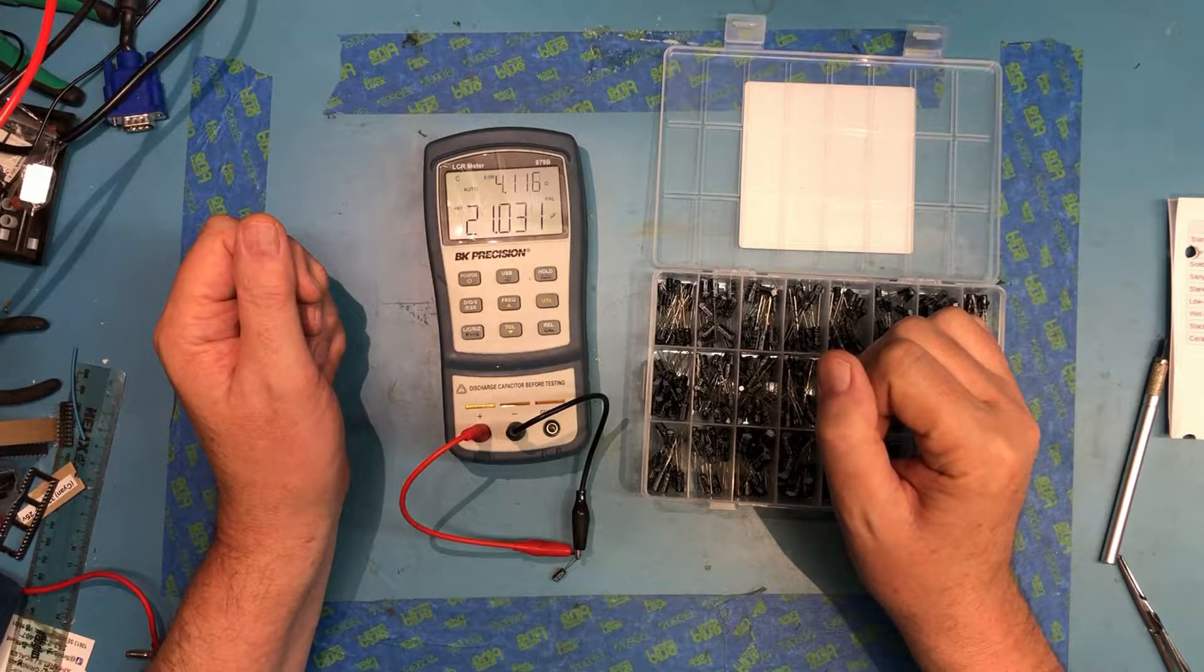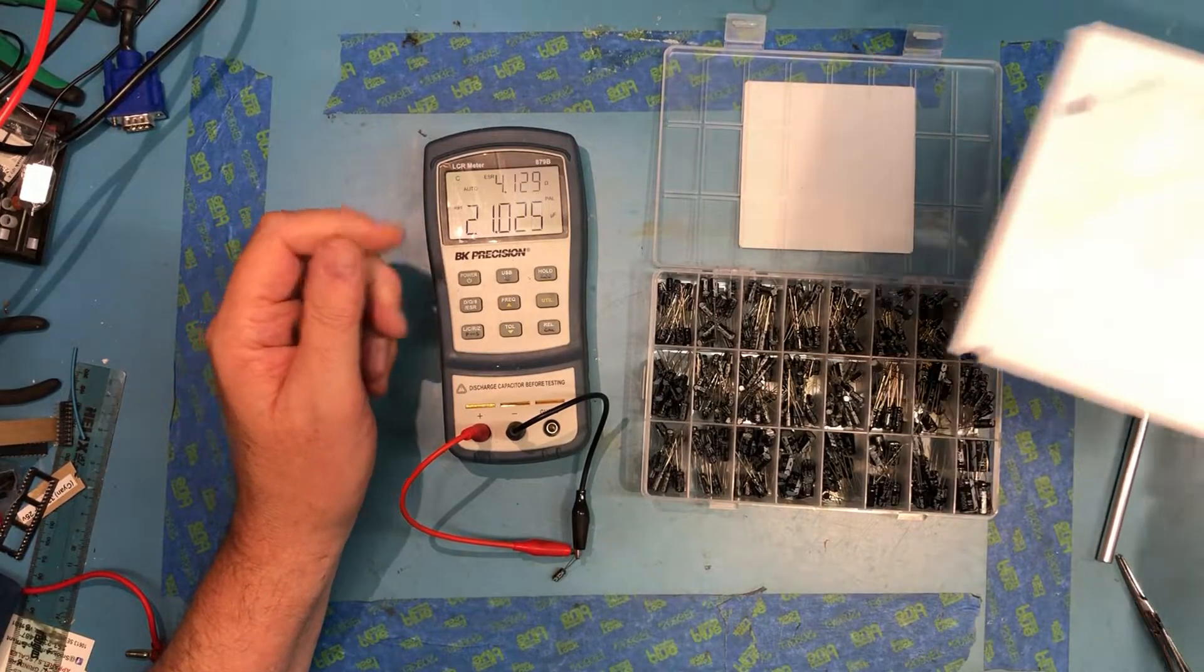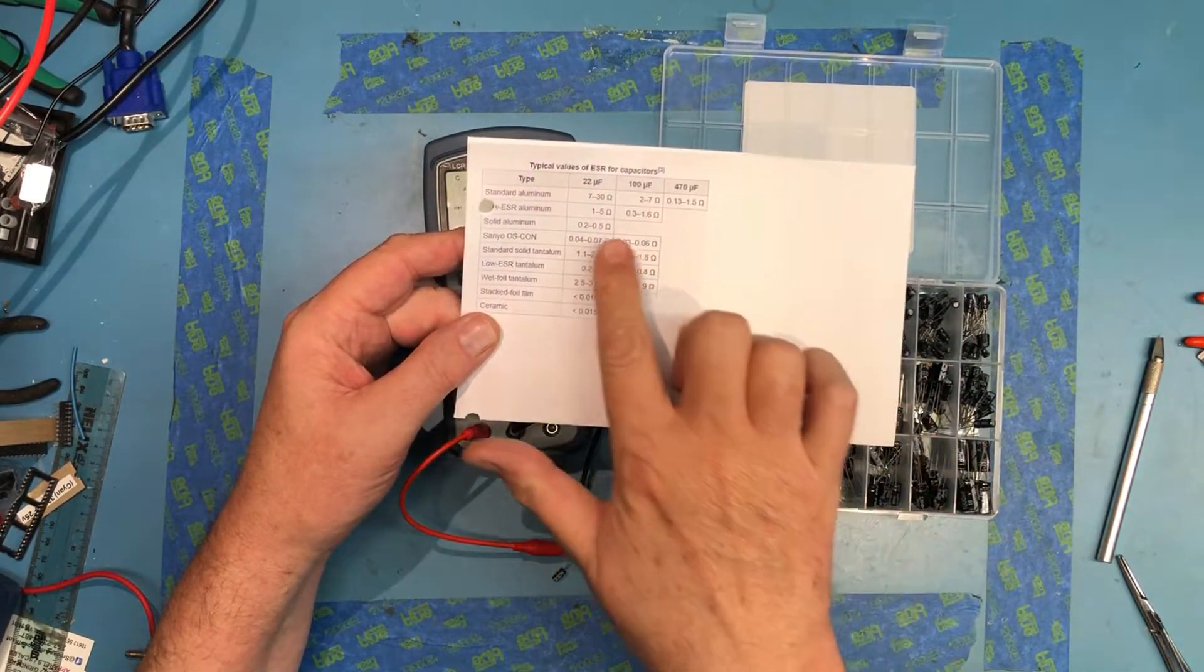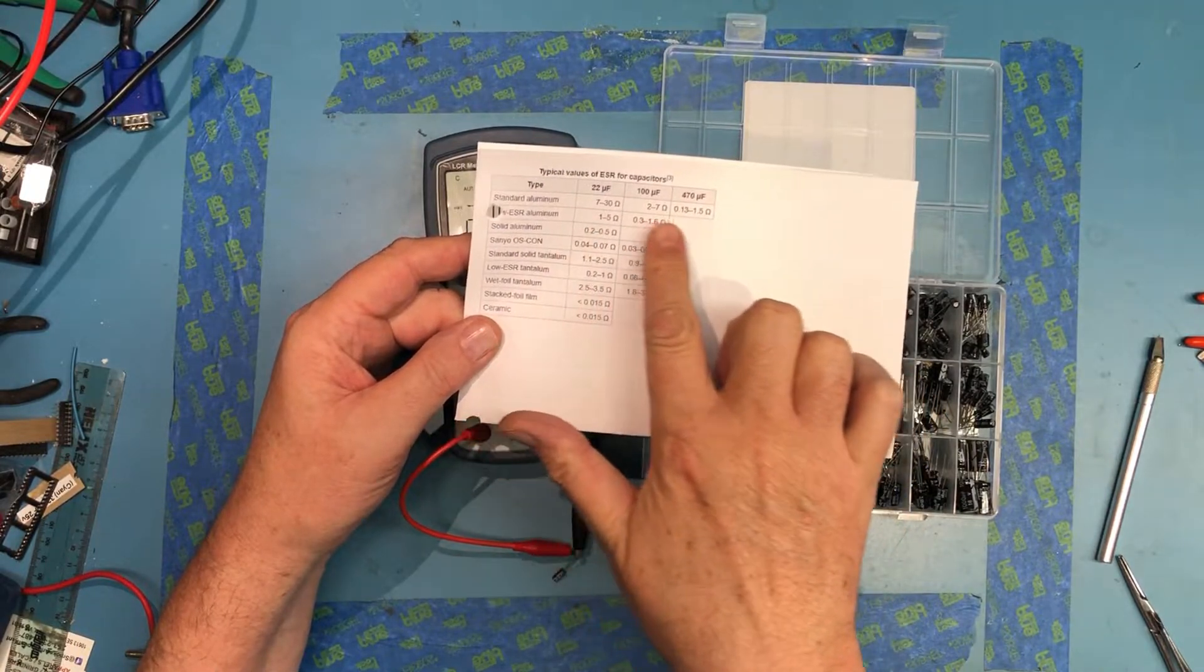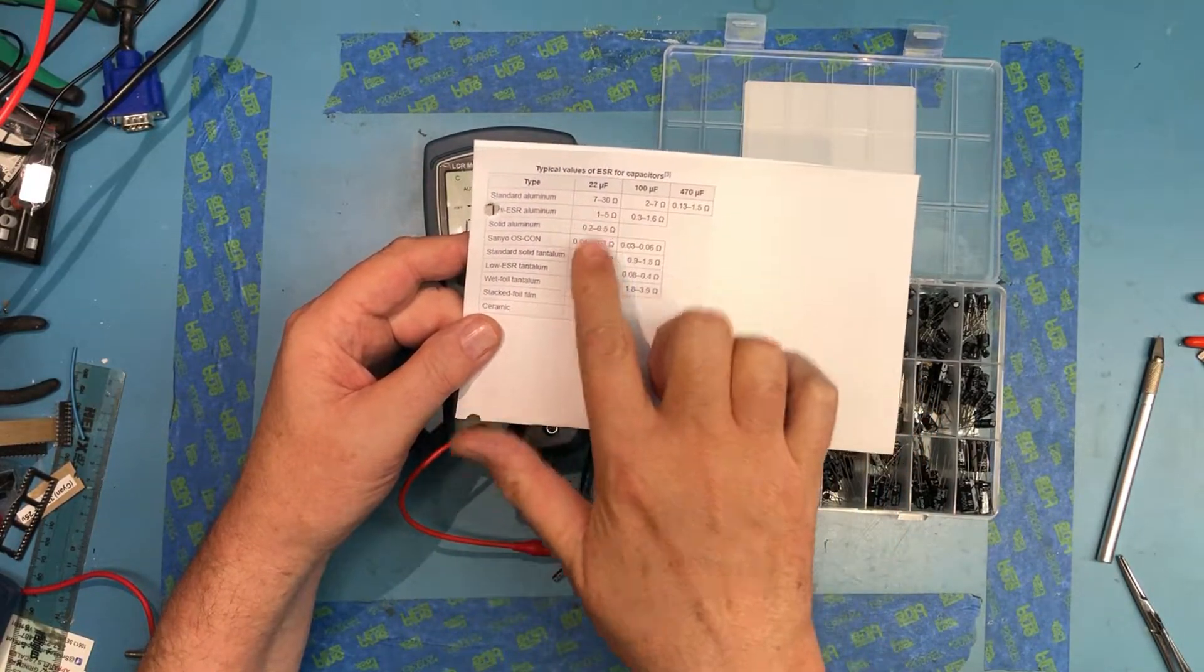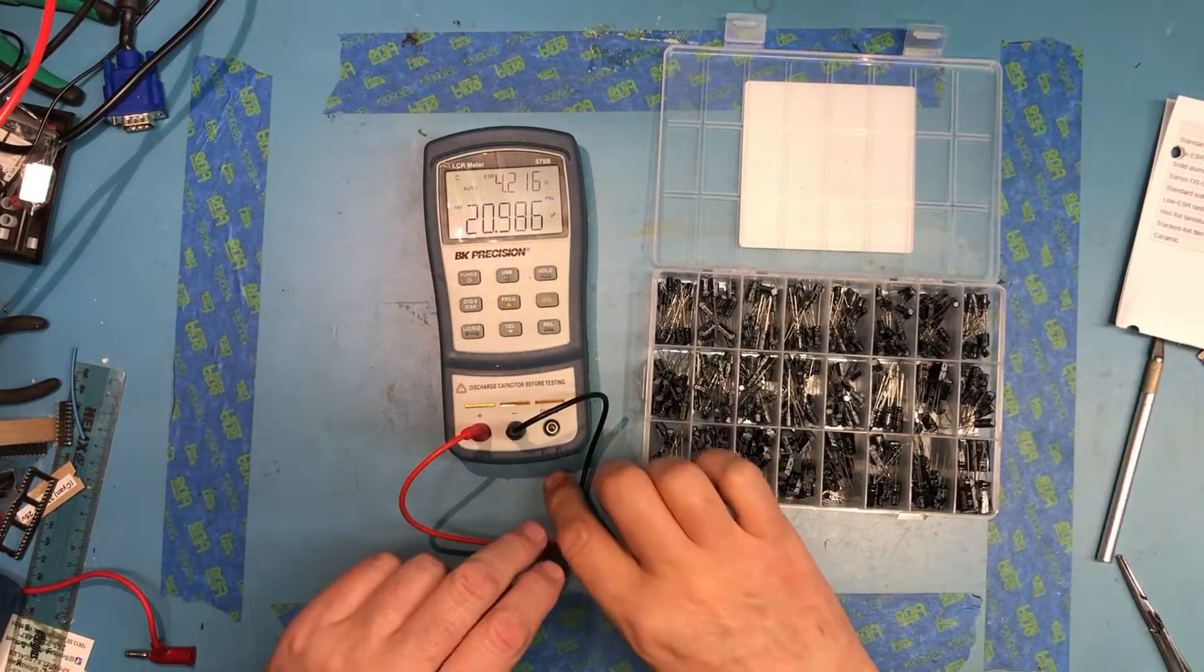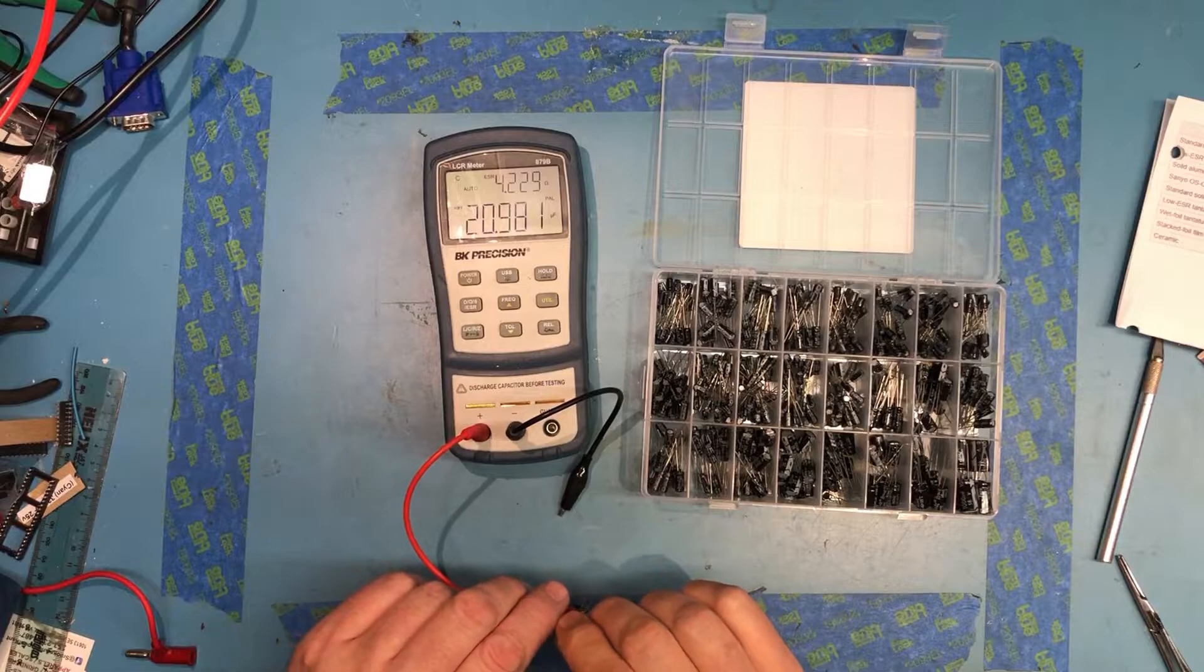For ESR resistances, I've just got a little, kind of, very much of a cheat lookup, because there's so many things that come into it. But it kind of gives me an idea of acceptable ESR values for standard aluminum caps. That seems like it's in a reasonable range.